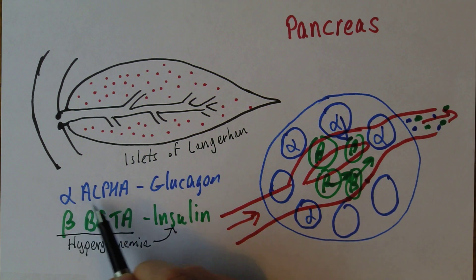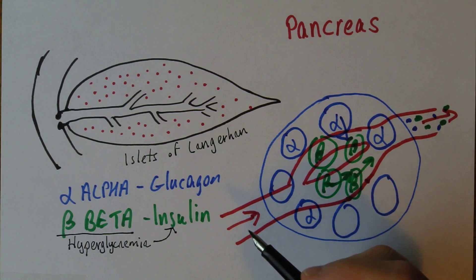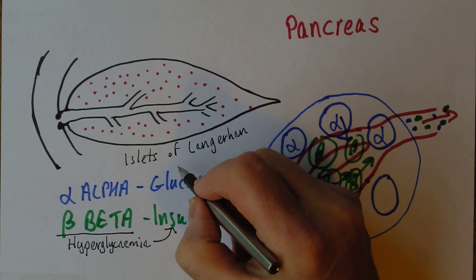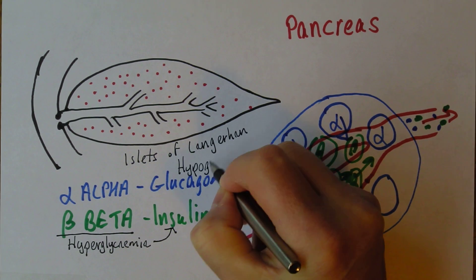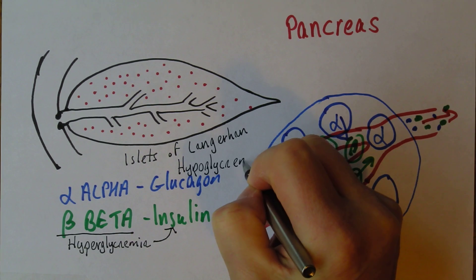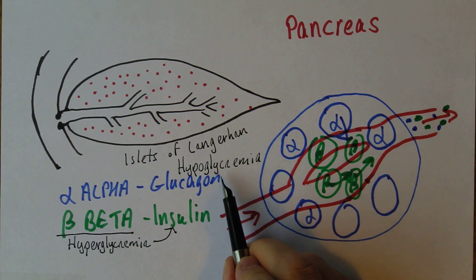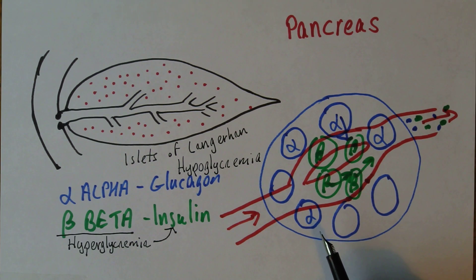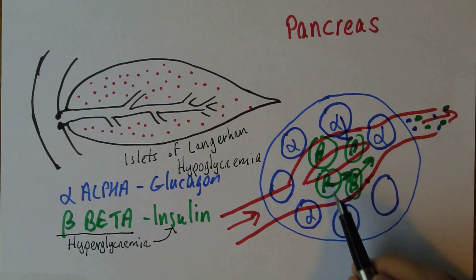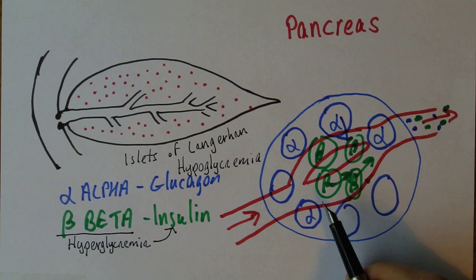Now conversely, the alpha cells—they'll start working when there's a hypoglycemia or relatively. So when the blood sugar levels start to fall, then the glucagon will be released. So these cells are both the detectors. The alpha and beta cells are both detectors, and they are the effector cells. They're the ones that release the hormone.